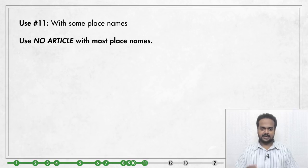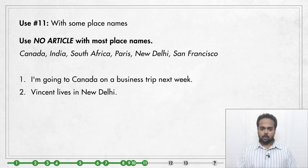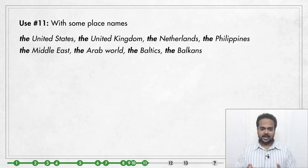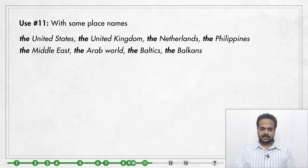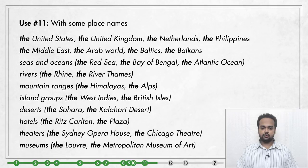Use number 11: referring to place names. Normally we use no article with names of places — we say Canada, India, South Africa, Paris, New Delhi, San Francisco. But some places have 'the' as part of the name — countries like the United States or the Netherlands, or regions such as the Middle East or the Baltics. With names of seas and oceans, rivers, mountain ranges, island groups, and deserts we use 'the.' This is also true for names of certain types of buildings like hotels, theaters, and museums.